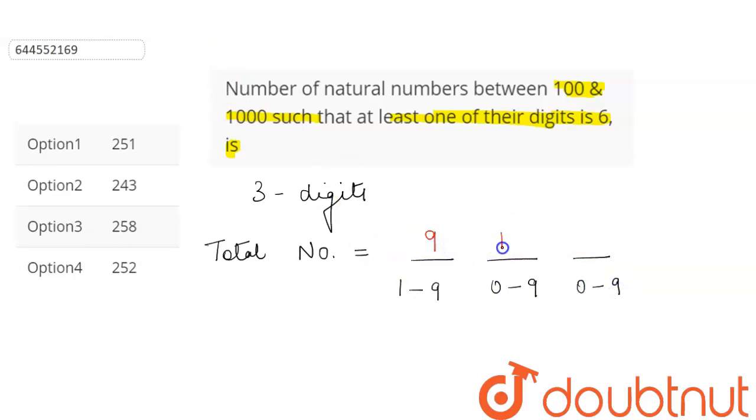So we will get the total number of outcomes as 900.